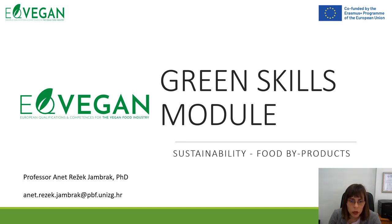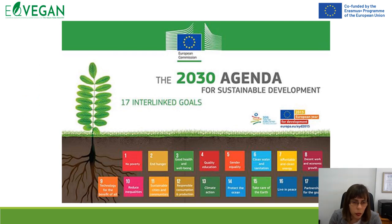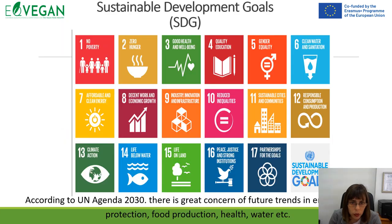The next topic we're going to discuss in the green skills module regarding sustainability is food byproducts. In line with sustainability and sustainable development goals, we need to think about different interlinked goals and sustainable development indicators. We have 17 sustainable development goals, with great concern for future trends in environmental protection, food production, and health.